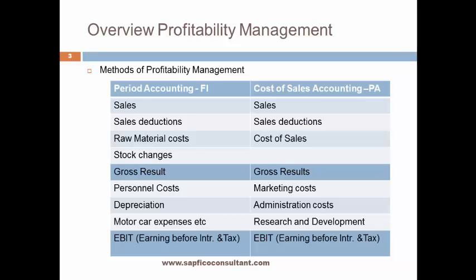Methods of profitability management: we have period accounting in FI and cost of sales accounting in profitability analysis, called PA. In FI, we show sales, sales reduction, raw material cost, and stock changes, and then we get the gross result. We show the breakdown of expenses by nature of expenses — that is personal cost, depreciation, motor car expenses — and then we get the EBIT, called earnings before interest and tax.